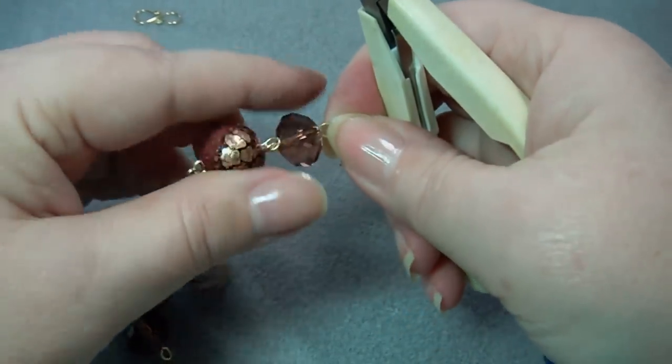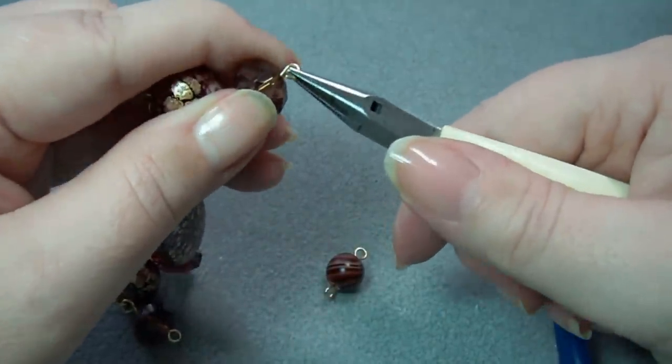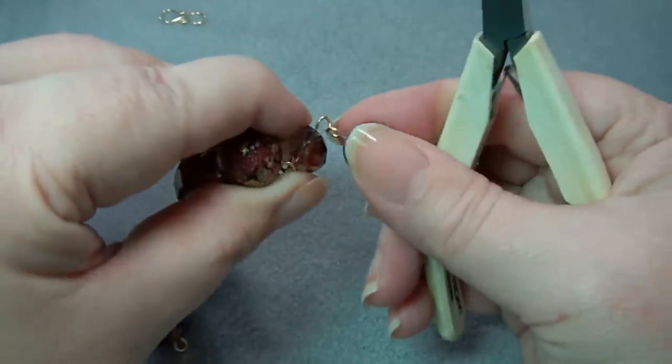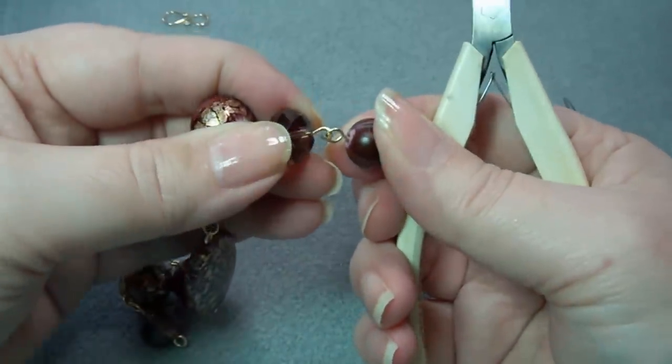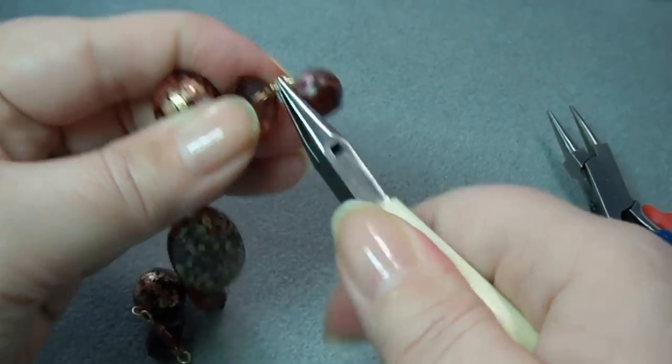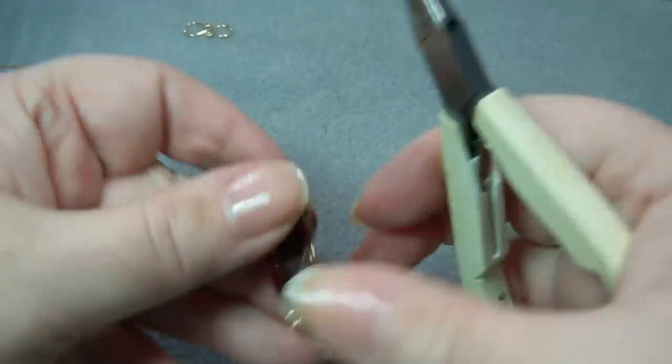I don't want to pull it a whole bunch. I just want to pull it enough so I can get this wire on. I've got it on the loop. Close it again. There we go. Let's do it again on the other side.